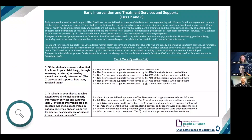Moving into Tiers 2 and 3 — the Early Intervention and Treatment Services and Supports domain — this is focused on assessing how well your LEA addresses the mental health concerns of students experiencing mild distress, some functional impairment, or who may be at risk for a given problem. At the Tier 3 level, it assesses how well your LEA addresses concerns for students already experiencing significant distress and functional impairment. These can include services provided by both school-employed and community-employed mental health professionals. The domain is divided by Tier 2 and Tier 3 questions, with two questions each per tier, eight questions covering both tiers, and four additional district support questions.